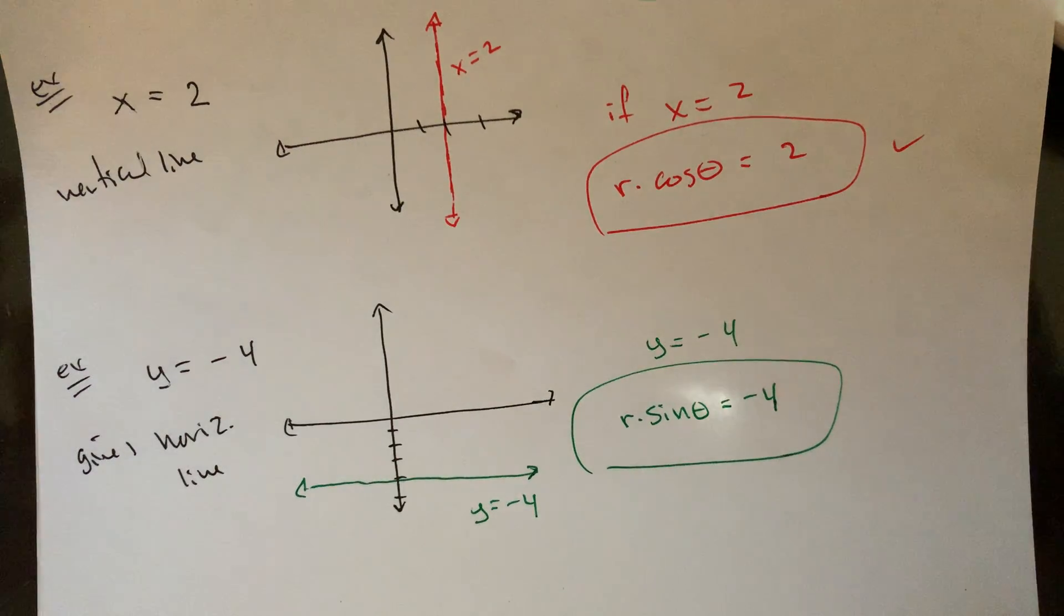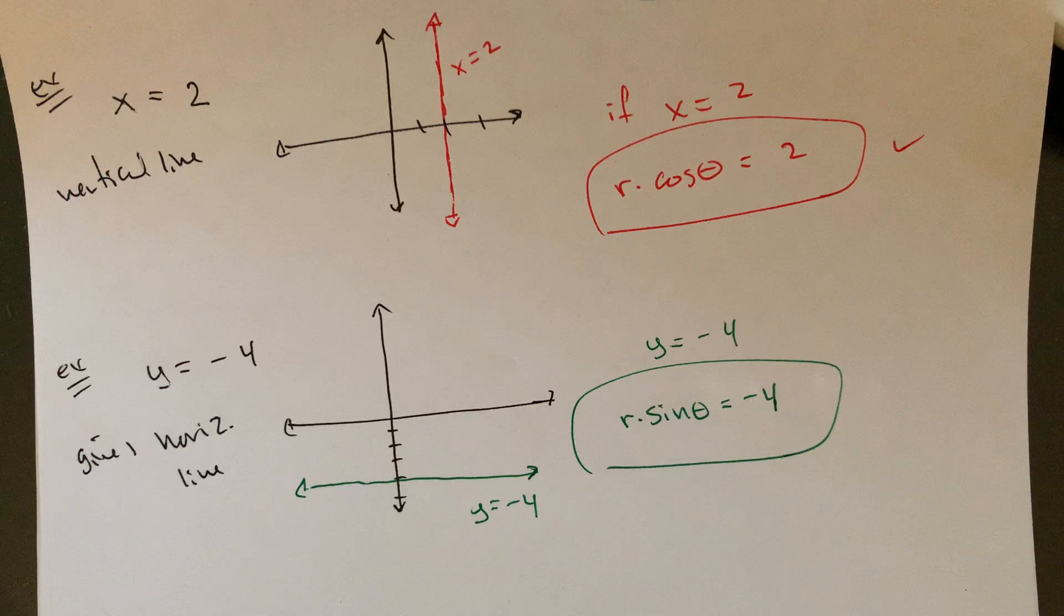So that's just like a couple very sort of simple equations kind of written in either form and kind of graphed. Obviously there's sort of other things that you can do here to a certain extent. You know, the advantage here with polar coordinates is that you could maybe write equations.